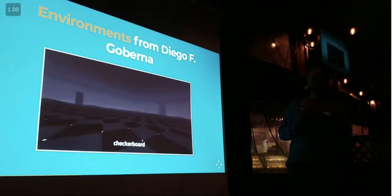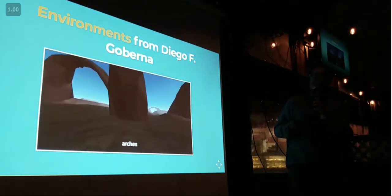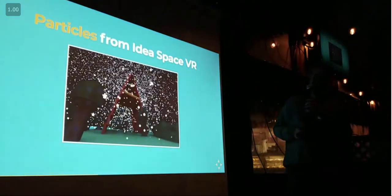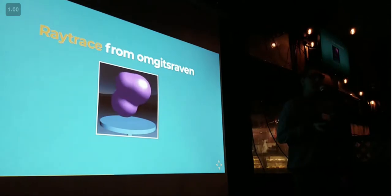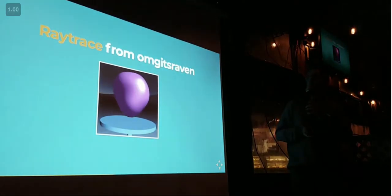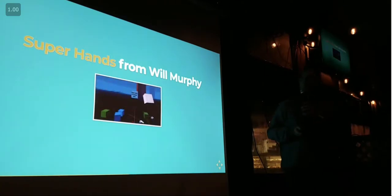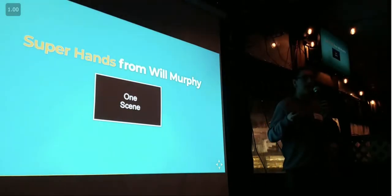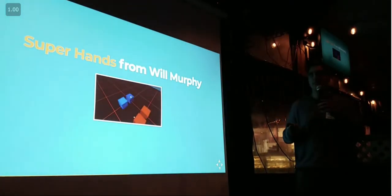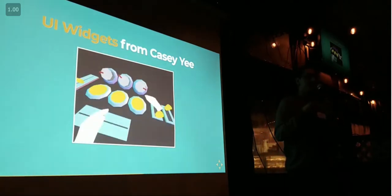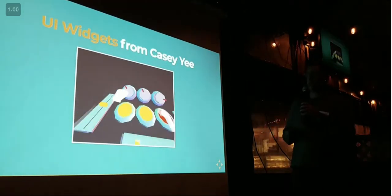A component can do all of this — it can actually start up, change the skybox, change the floor — with this really beautiful environment component example. Components can generate other components, like a particle system. Components can abstract away really complicated shader logic, like this raytrace example. A component can actually be a hidden collection of components. There's this really interesting super hands component that in VR gives you hand interaction models, but also allows you to do things like grab blocks when you're on your desktop. It handles a bunch of different interaction types.